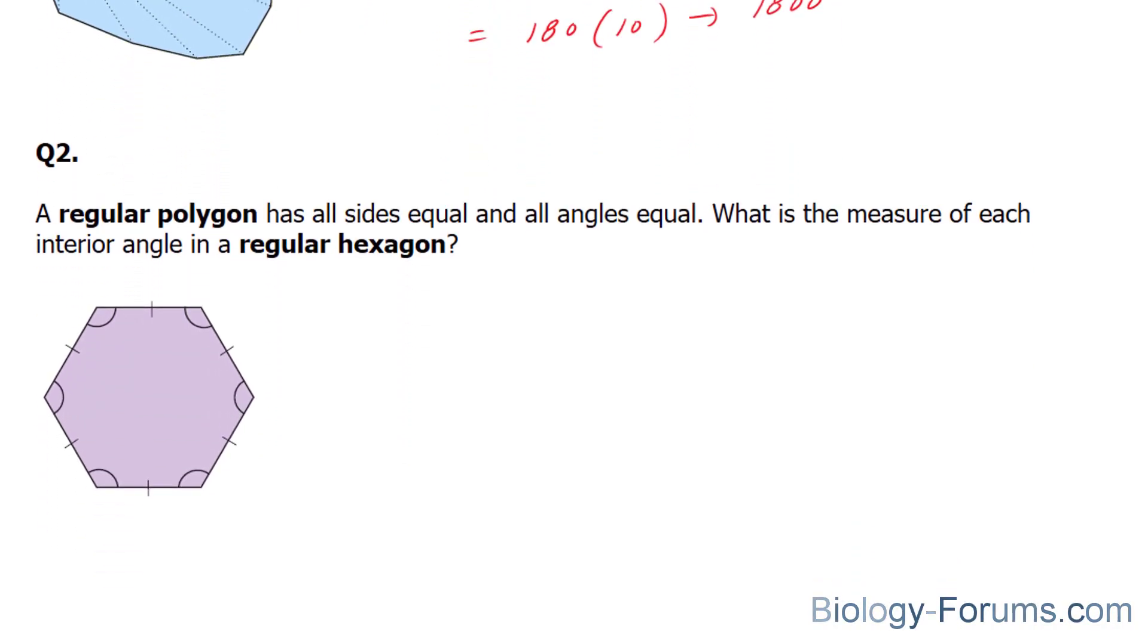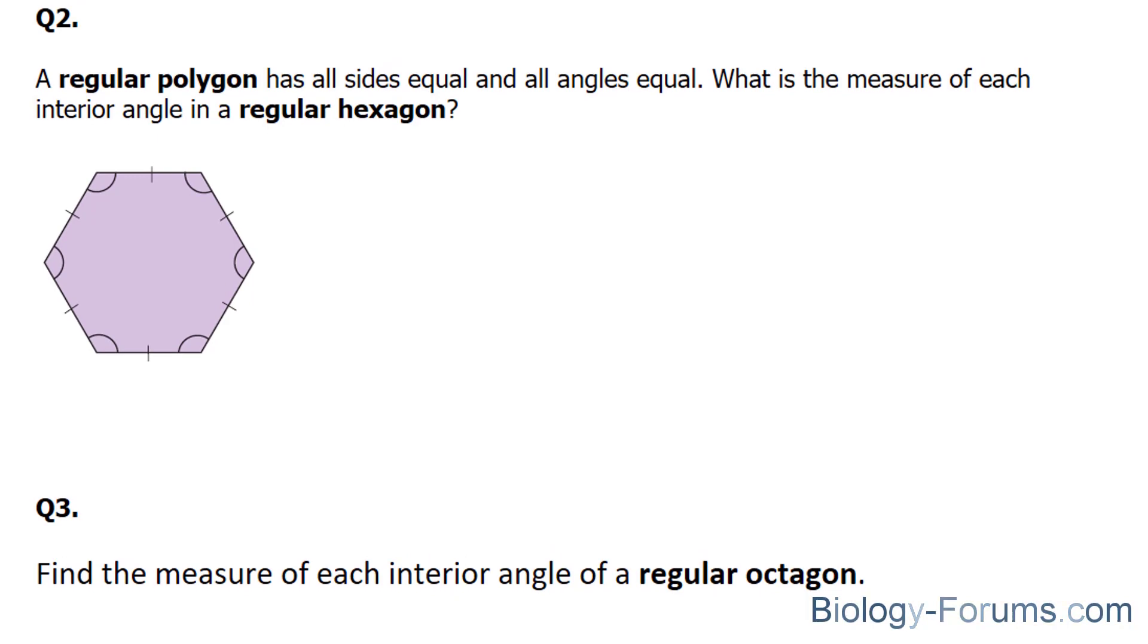Question number two asks, a regular polygon has all sides equal and all angles equal. So that's the definition of a regular polygon. So here we have a hexagon, and notice that every side is equal. What is the measure of each interior angle in a regular hexagon?